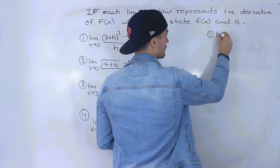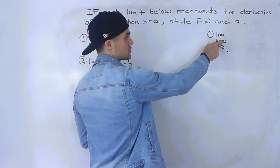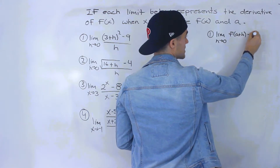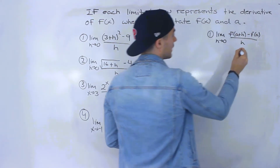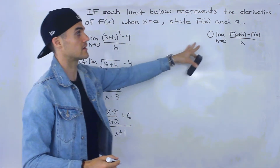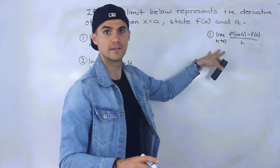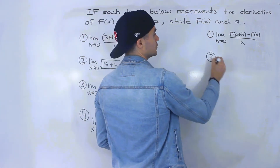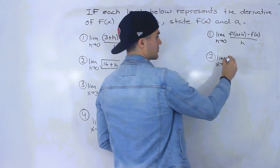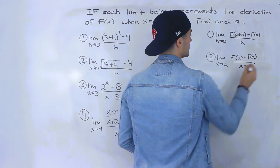Just to do a review: the first definition, the most popular one of a derivative, is the limit as h approaches 0 of f(a+h) minus f(a), all over h. That would be the derivative of a function f(x) when x is equal to a. The alternative definition is the limit as x approaches a of f(x) minus f(a), all over x minus a.